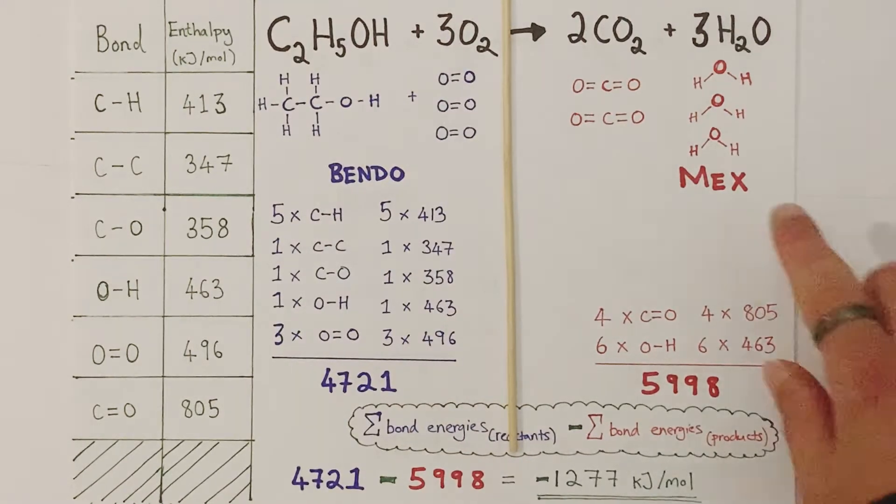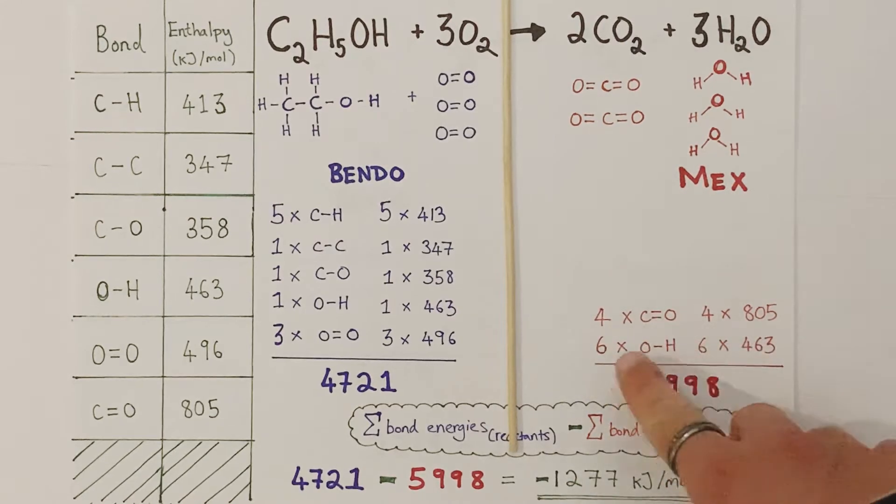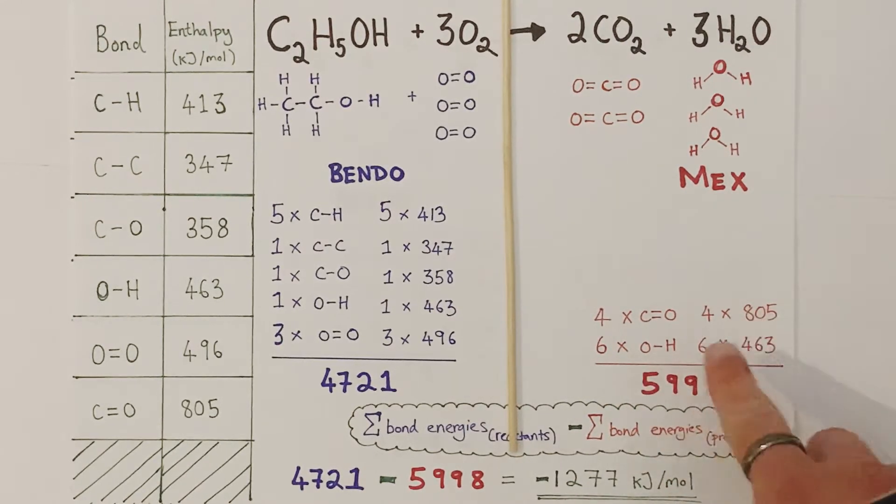And again, I count up and I can see there are one, two, three, four carbon-oxygen double bonds. And one, two, three, four, five, six oxygen-hydrogen single bonds. So again, I write that down as my list to account for them. I add in the values for their enthalpies, multiply them by those numbers, and I get my subtotal as 5998.